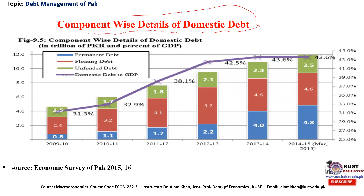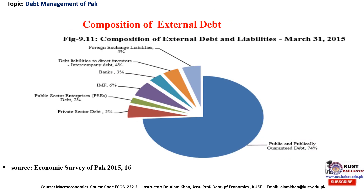Regarding the component-wise detail of domestic debt: domestic debt increased by Rs 1,012 billion during the first months of the current fiscal year and was recorded at Rs 11,932 billion at end-March 2015. This increase was due to the issuance of PIBs and T-bills amounting to Rs 781 billion and Rs 566 billion respectively.